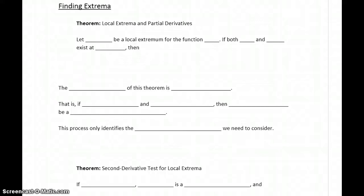What we want to do is find that point or points that either have a larger function value than all nearby points or a smaller function value than all nearby points. So we need to establish a process that's going to allow us to do that.